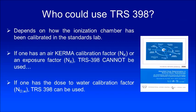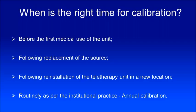Who should be using TRS-398? This question was very relevant in the year 2000 to early 2000s, because most calibration laboratories — SSDLs — were providing N_K or N_gas, and therefore one had to use TRS-277. When TRS-398 came, not every laboratory was providing N_D,w — the dose to water calibration factor. You can use TRS-398 only if you have N_D,w. If you have N_K, N_X, or N_gas, then you should use the older code of practice. So if you have N_D,w, you are permitted to use TRS-398.